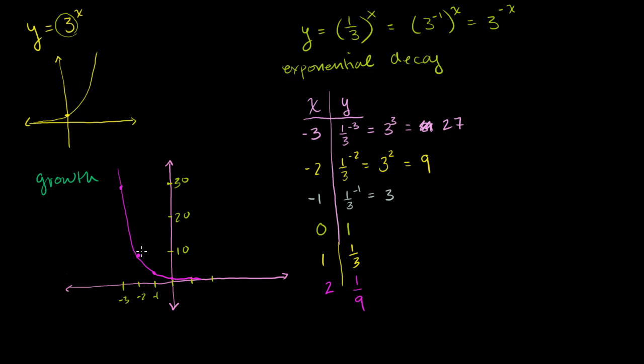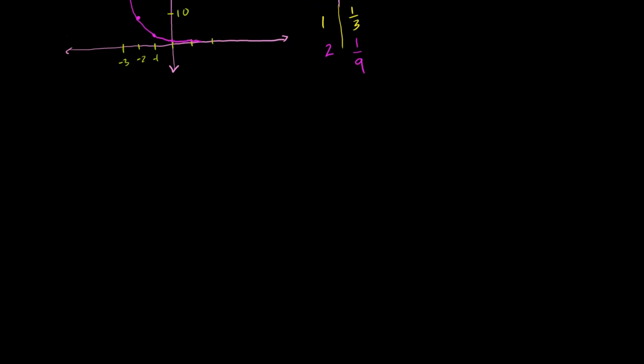So you see a decay function is kind of reversed around the y-axis. We start from a large quantity and we decay very, very, very quickly. So in either case, exponential functions, whether we have exponential growth or exponential decay, things happen quickly. Now, using what we know about exponential decay functions, let's do an actual word problem.